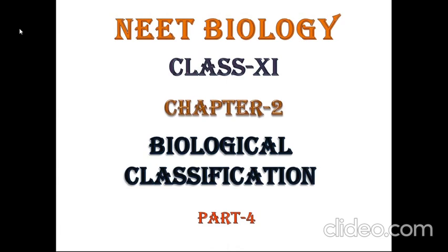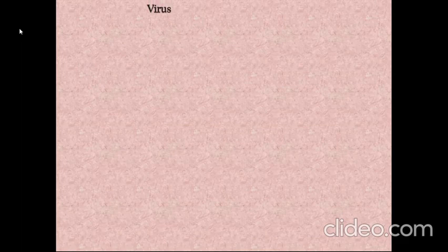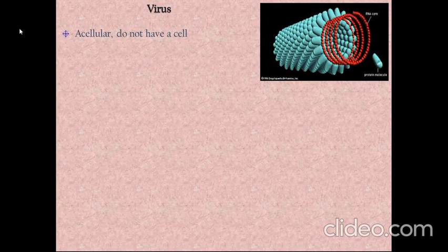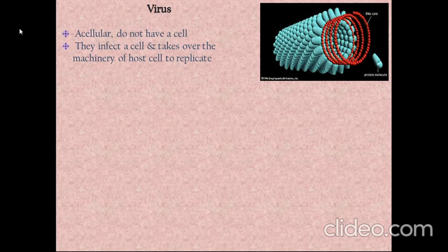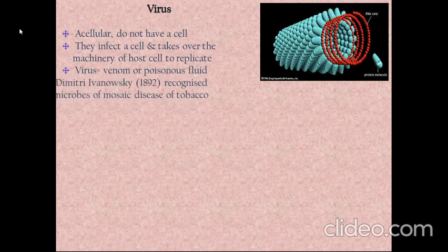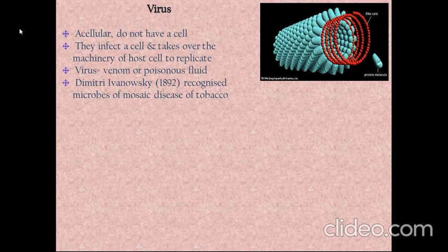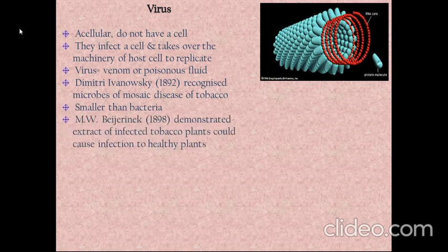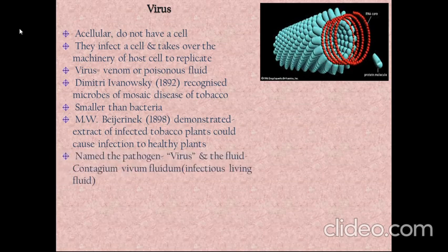Welcome again to Reds Biology. Today we will discuss the last part of biological classification, starting with viruses. They are acellular — they do not have any cell. They infect a cell and take over the machinery of the host cell to replicate themselves. Virus means venom or poisonous fluid. In 1892, Dimitri Ivanovski recognized microbes of mosaic disease of tobacco, which are smaller than bacteria. In 1898, Beijerinck demonstrated that extract of infected tobacco plants could cause infection in healthy plants, and he named the pathogen as virus.